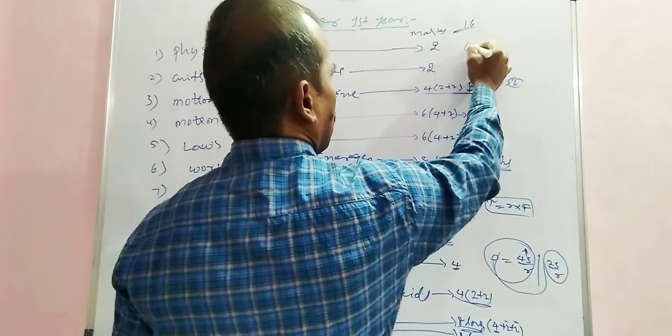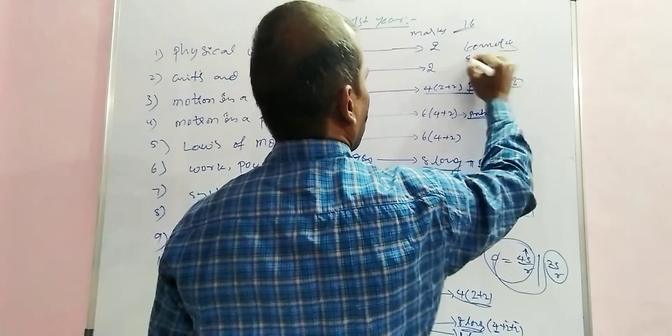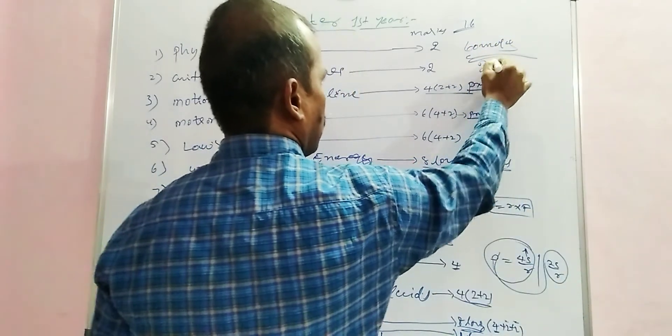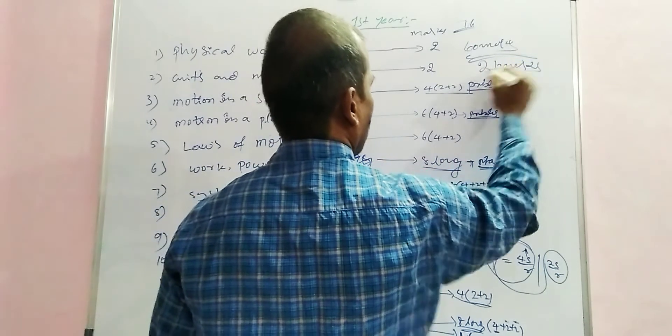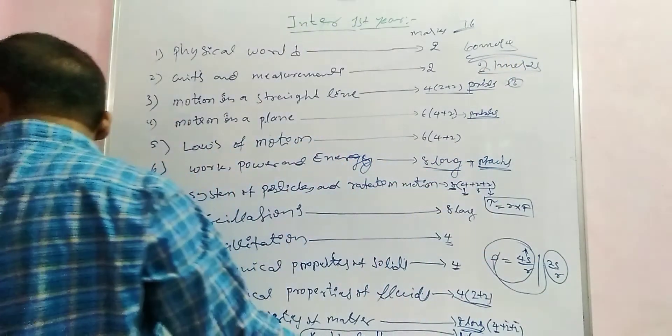The maximum marks for the paper is 76. The pass mark for physics, chemistry, botany, or geology is 21 marks.